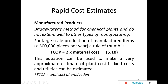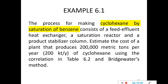The Bridgewater method is only suitable for chemical plants and does not extend well to other types of manufacturing. For large-scale production of manufactured items of more than 500,000 pieces per year, a rule of thumb is to use two times the material cost. These equations can also be used to make a very approximate estimate of plant cost if fixed costs and utilities can be estimated. TCOP refers to total cost of production and is only applied for manufacturing.